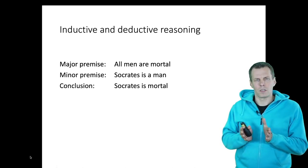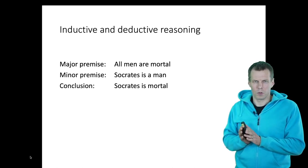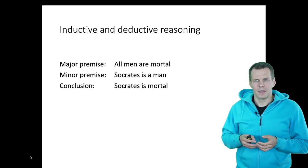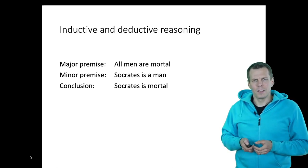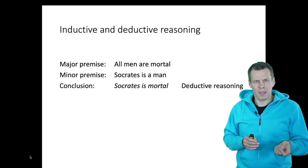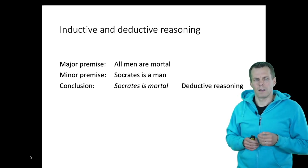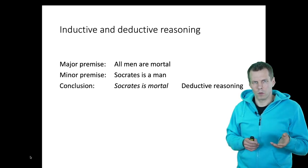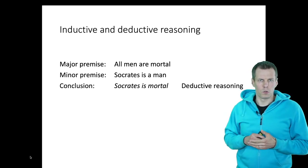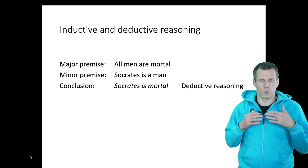Inductive and deductive reasoning both work with a major premise, a minor premise, and a conclusion, where one of these is unknown and is inferred. In deductive reasoning, we know that all men are mortal and that Socrates is a man, and we infer that Socrates is mortal. If both the major and minor premises are true, then the conclusion is always true — the truth value of the claim is preserved.